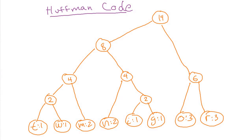So that's the first and very important step of building the Huffman tree for your text. The next thing we're going to talk about is how to actually get the code and do the encoding from that tree. We're going to save that for the next video — see you next time.